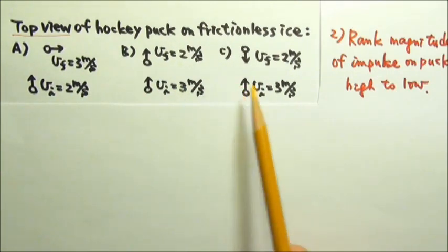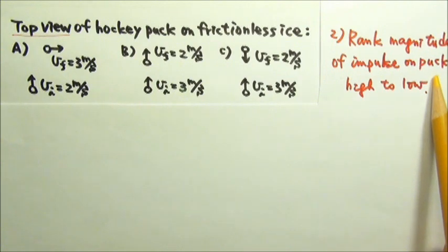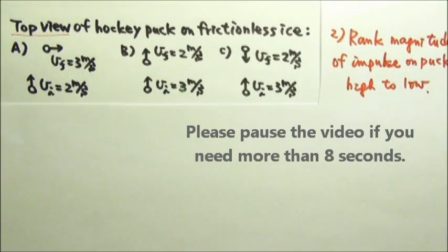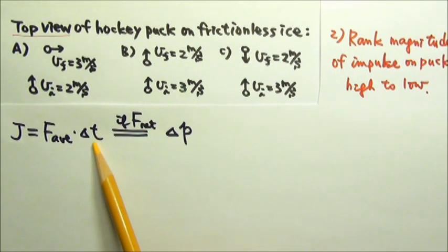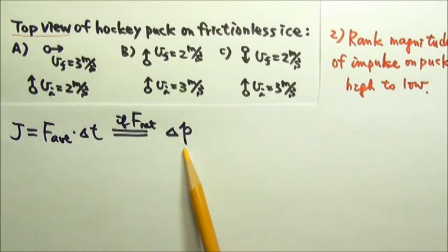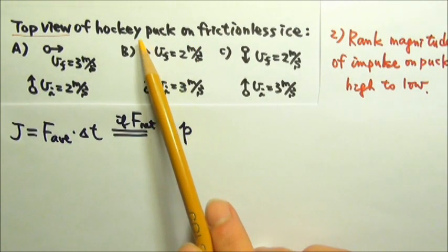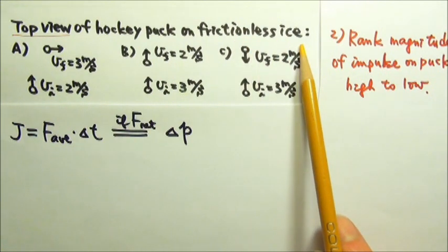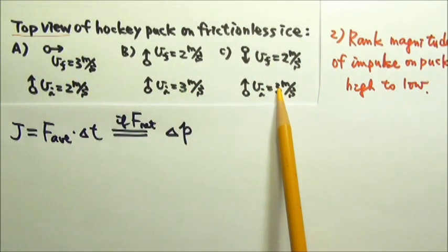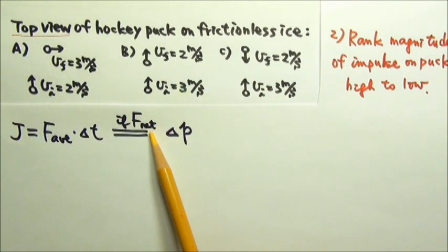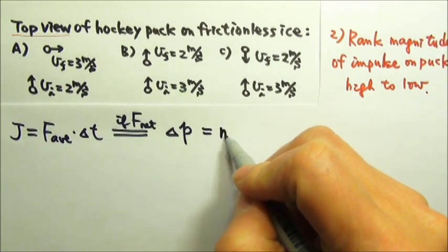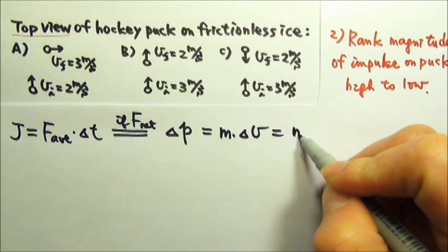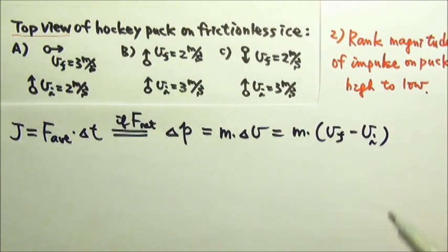Now let's rank the scenarios according to the magnitude of the impulse on the puck from high to low. We know that impulse is average force times time, and the impulse by net force is the change in momentum. Because it's a hockey puck on horizontal frictionless ice, the exerted force on the puck is the net force on the puck. Therefore, the impulse is the change in momentum, and the change in momentum is m times delta v. It's the mass times the final velocity minus the initial velocity.